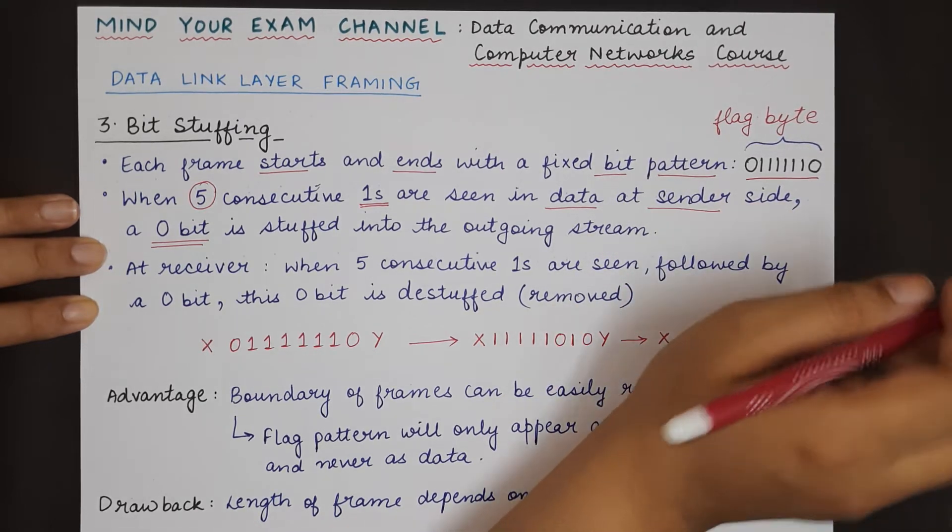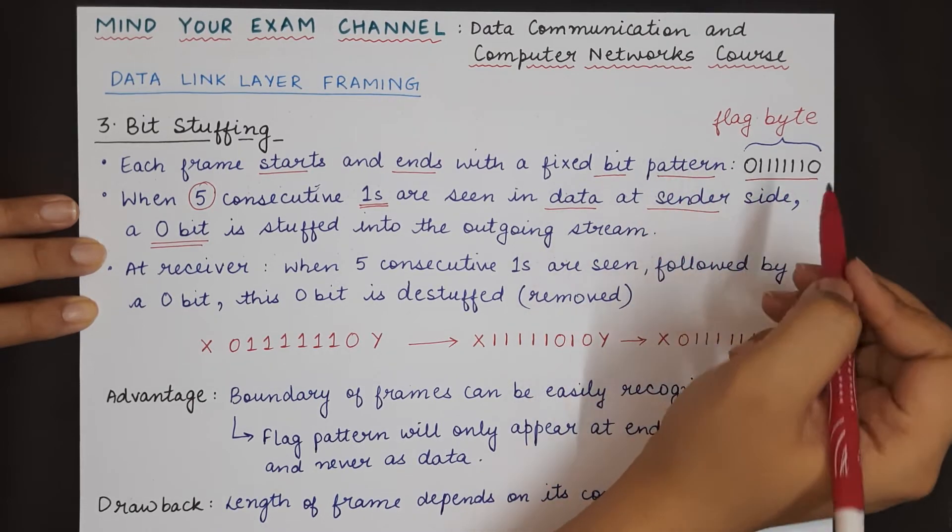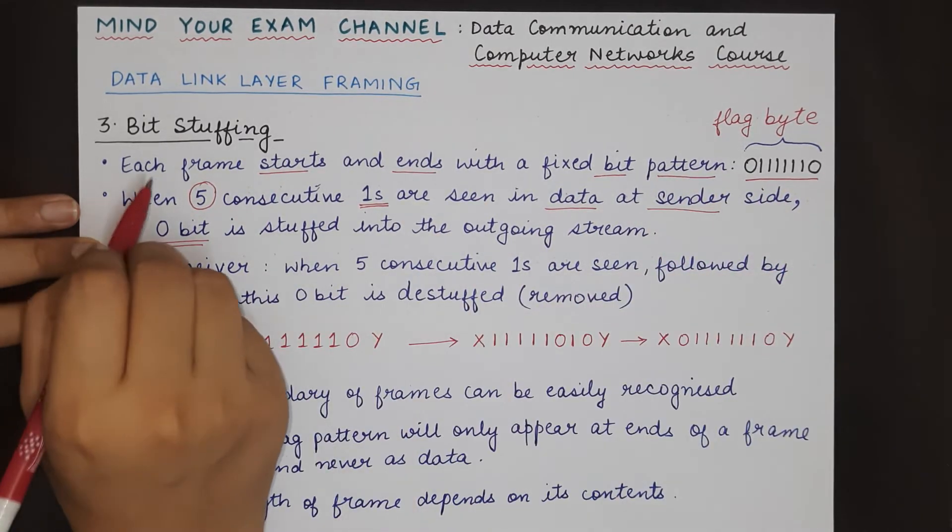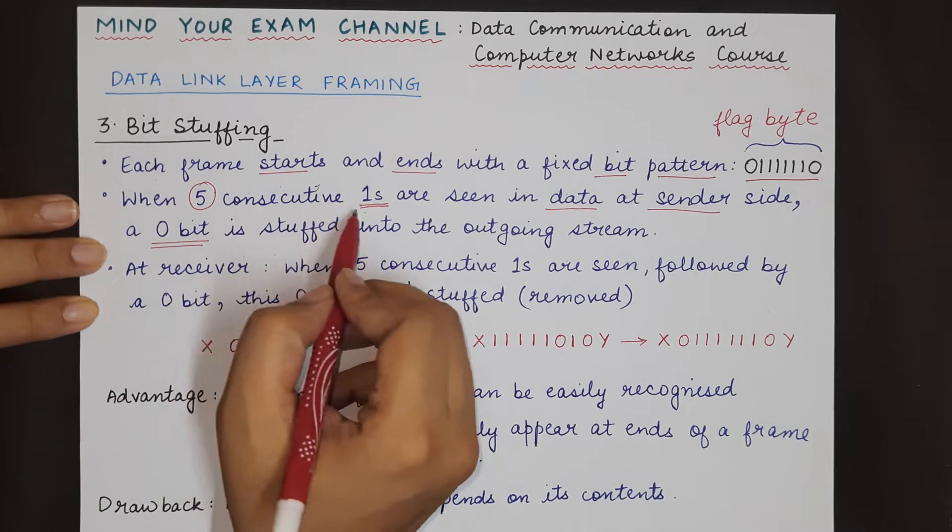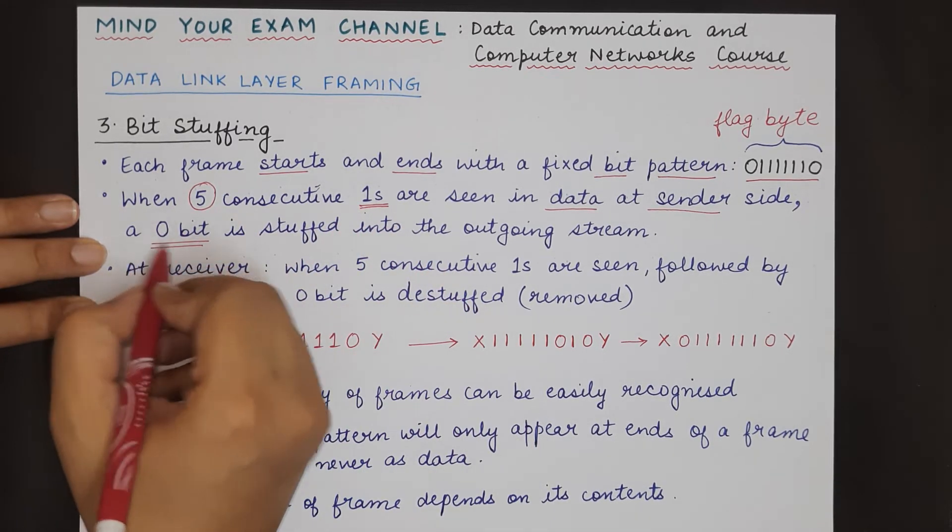To avoid any confusion, this is the flag byte pattern that appears at the start and end of the frame. In bit stuffing, if five consecutive ones are seen in the data, the sending side inserts a zero just after these five ones in the outgoing stream.